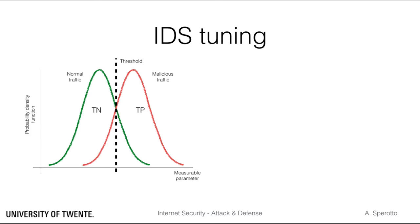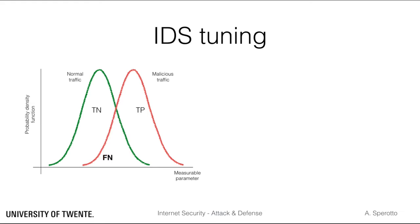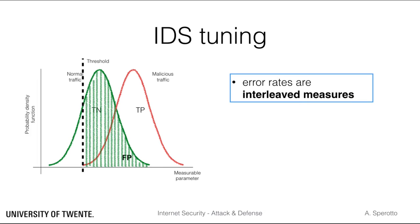Let's go back to the benign and malicious traffic distributions. By choosing appropriate thresholds, one might be able to reduce the number of false positives to zero. However, this will most likely raise the number of false negatives. Conversely, you can find a threshold such that the number of false negatives goes to zero, but most likely at the cost of a larger number of false positives. This tells us two things: first, error rates can rarely be treated separately — they are in most cases interleaved measures. Second, you can look for parameter values that minimize both error rates, but this is not the only option.